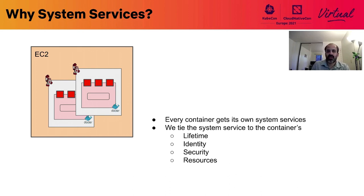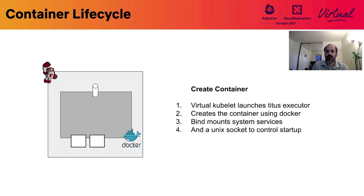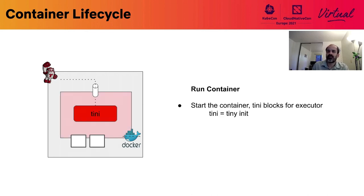So how does Titus executor run system services? It starts by creating the container using the image specified by the user, and then it bind mounts data containers which package the system services into it. These are rootless containers in our system. It also bind mounts a socket which we use to control the container and a few volumes, and it does all of this in parallel.